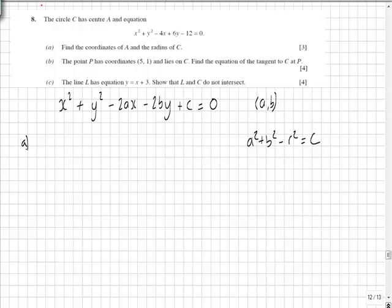So first of all, if we look for the center, comparing coefficients we know that minus 4 equals minus 2a, which means 2 equals a. We also can see that 6 equals minus 2b, meaning that minus 3 equals b. So our coordinates of the center of the circle are (2, -3).